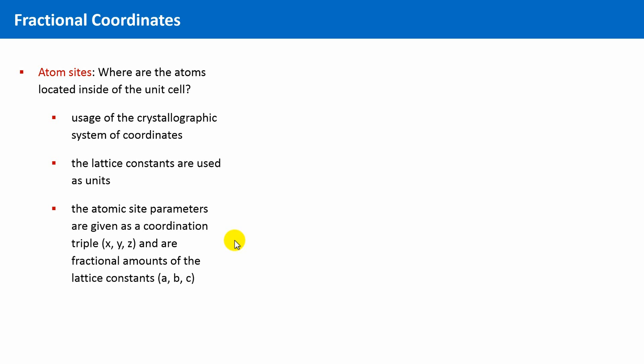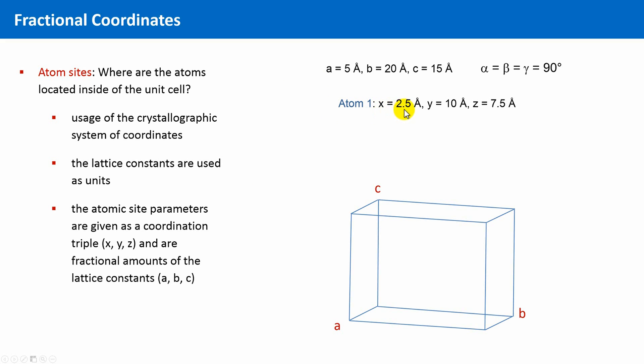This is best illustrated by an example. Let's say we have an orthorhombic unit cell with these lattice parameters. An atom of the crystal structure might be located at x equals 2.5 angstroms, y equals 10 angstroms, and z equals 7.5 angstroms.